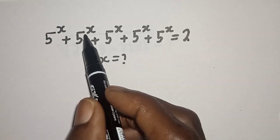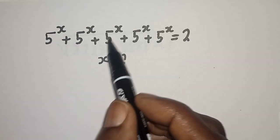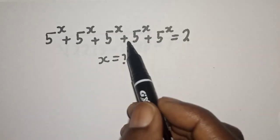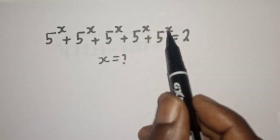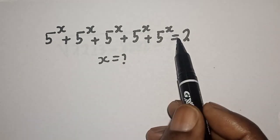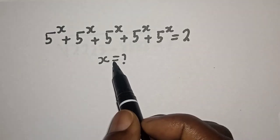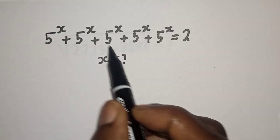5 raised to power s plus 5 raised to power s plus 5 raised to power s plus 5 raised to power s plus 5 raised to power s is equal to 2. What is the value of s?